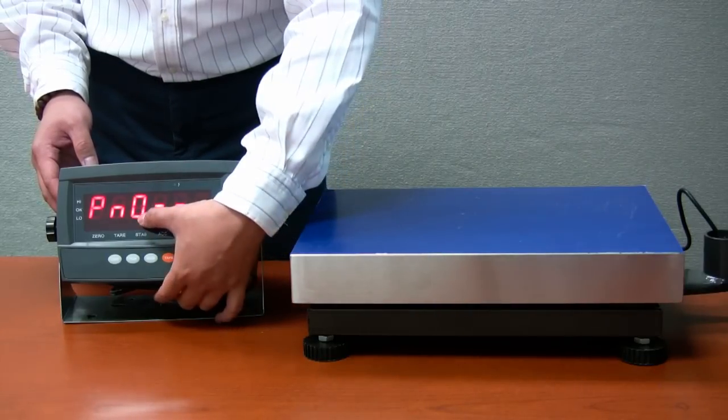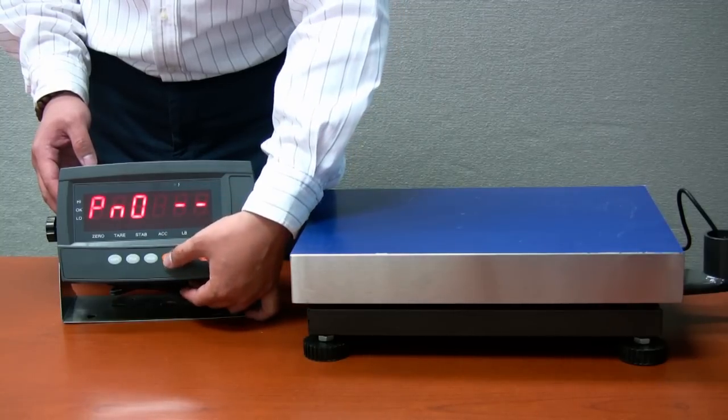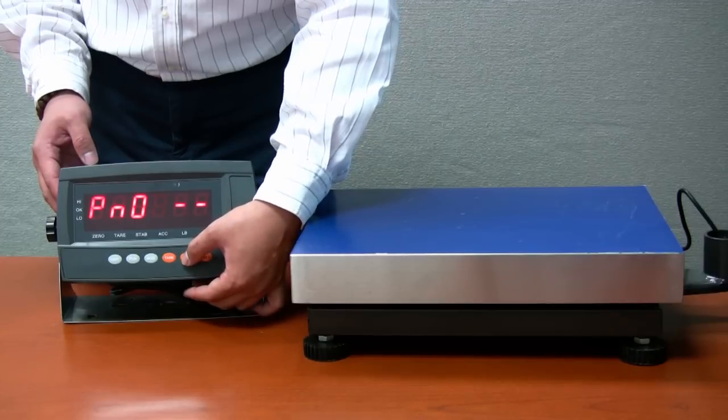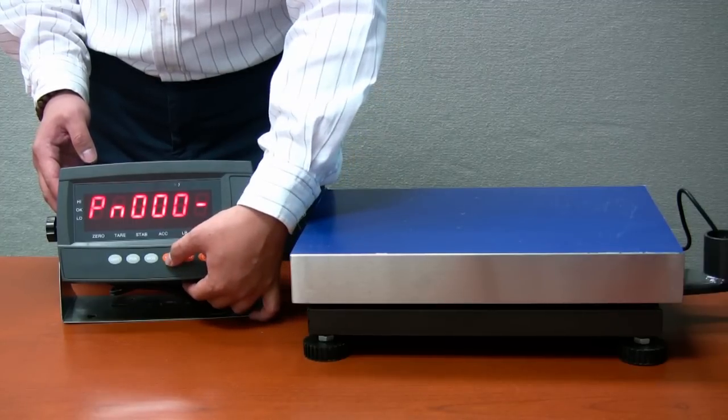First press TAR key to change the first blinking dash to zero. Press zero key to move to the next dash. Press TAR key to change it to zero. Repeat two more times to change all the dashes to zero.